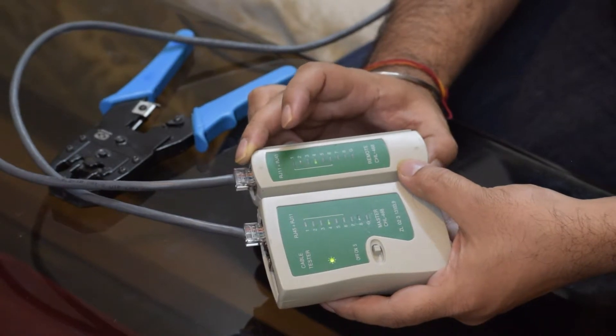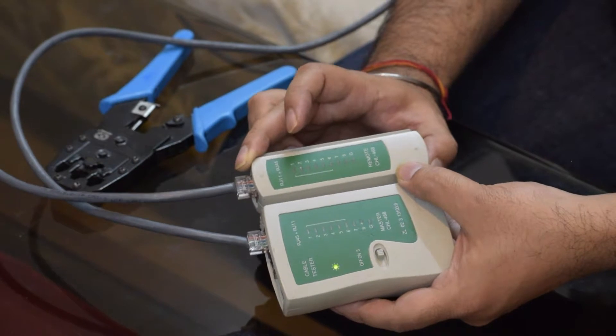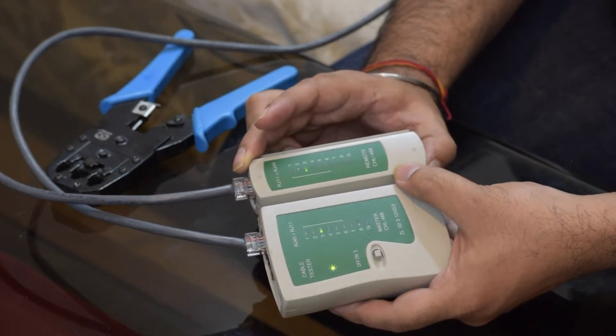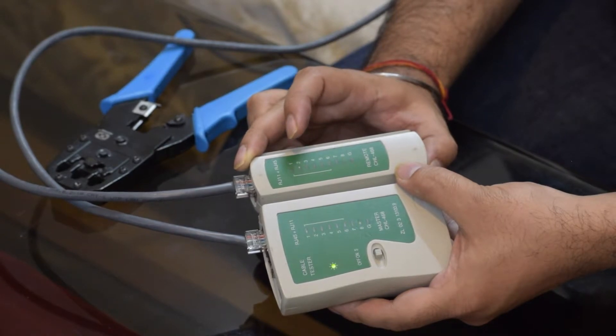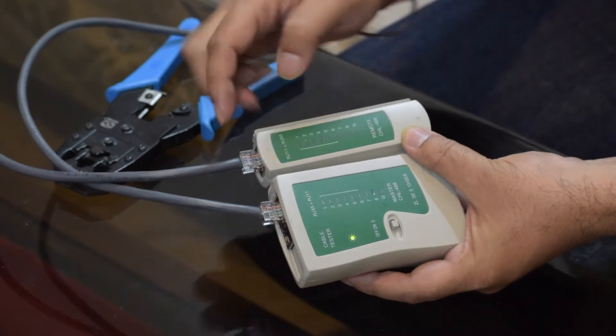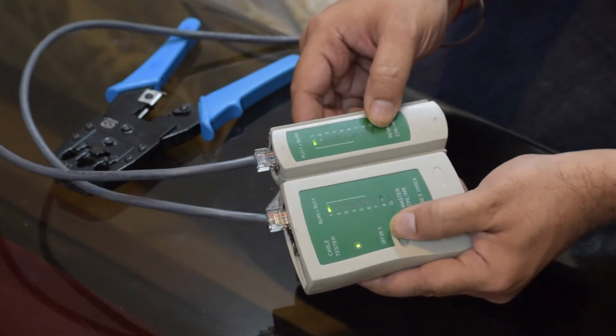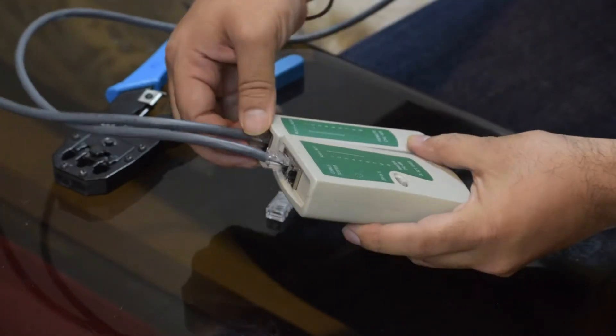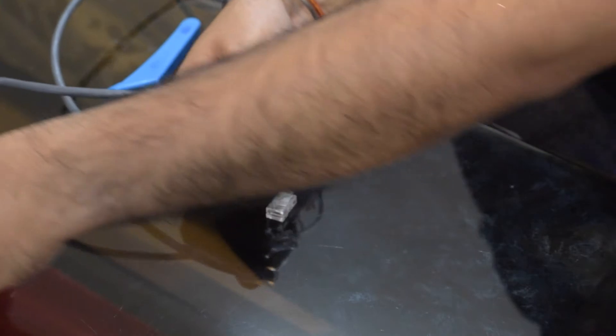But we pretty much know that pin 5 has missed a connection somewhere. This kind of a test will save you a lot of effort and man hours if you do it right after you crimp. Now what this means is that it might not be both ends that might be bad. It might be just one of the ends that might have missed.